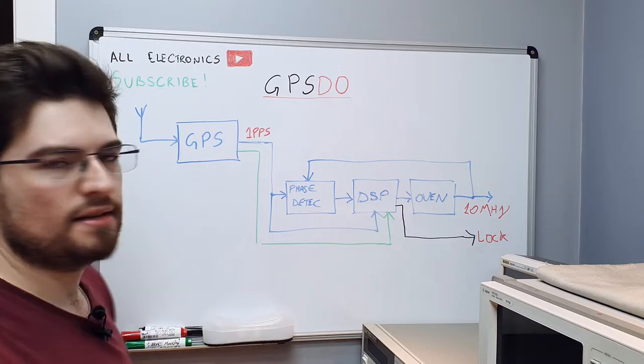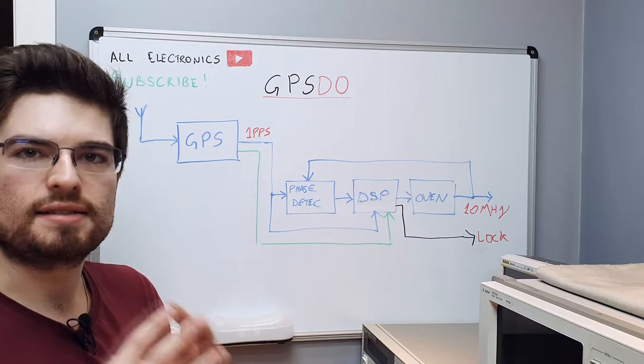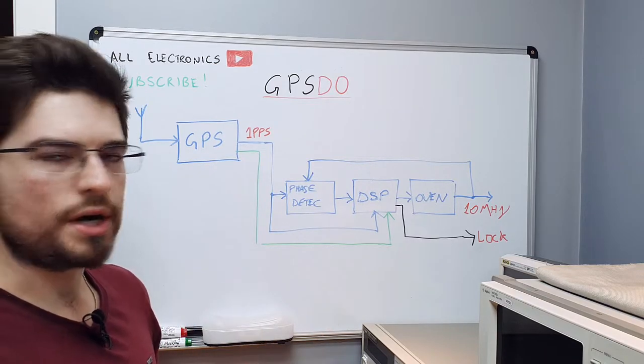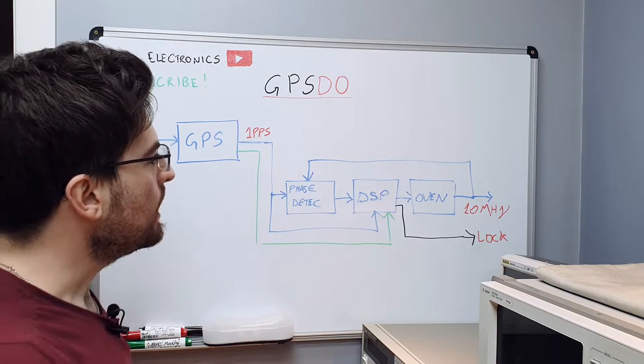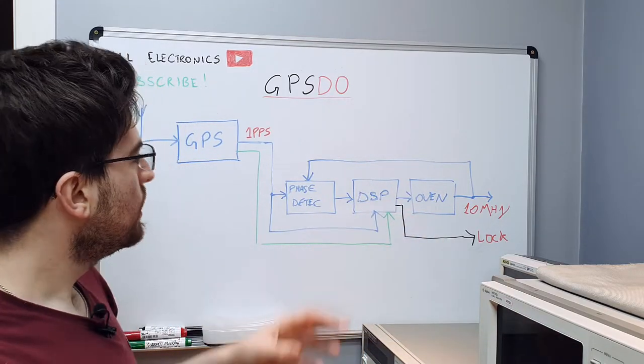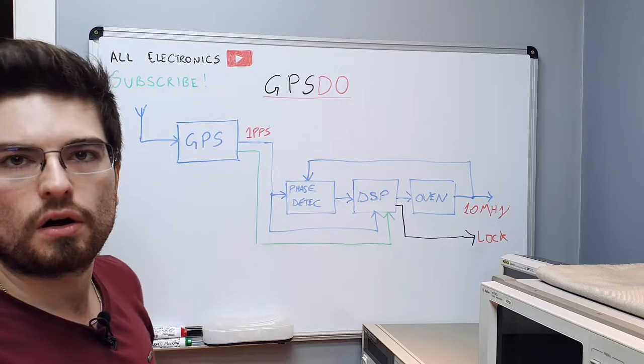The GPS has internal clock that's very stable and synced with a global frequency reference. Our main goal here with this kind of topology is to sync the phase and the frequency of an oven oscillator with the internal clock of the GPS.